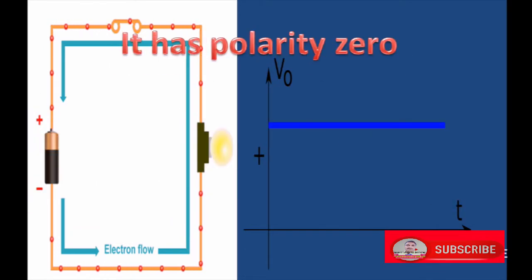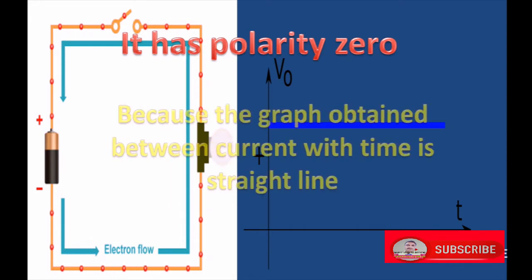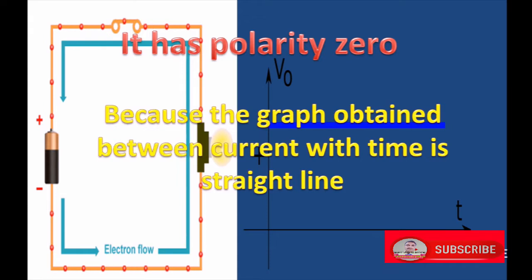In DC, the direction of current remains the same. Hence the graph obtained between current and time is in the form of a straight line. Therefore it has polarity zero. Polarity is zero because the graph obtained between current with time is a straight line.